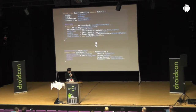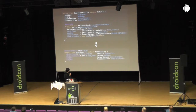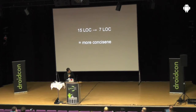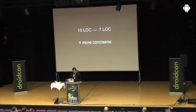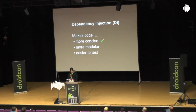Here I put two complete examples together to give you an idea of the differences. We had 15 lines of code without Guice and 7 with it. So it's definitely more concise, and we can put a checkmark on our first property.